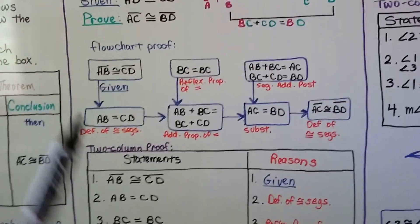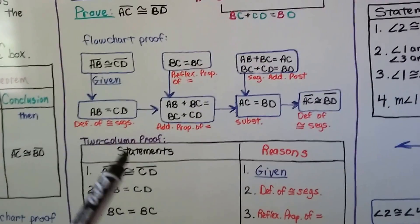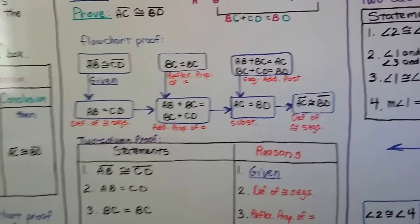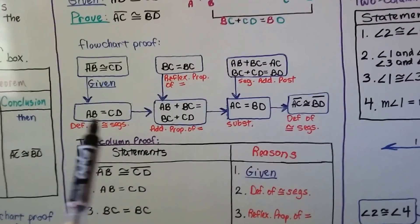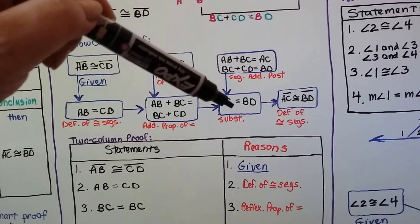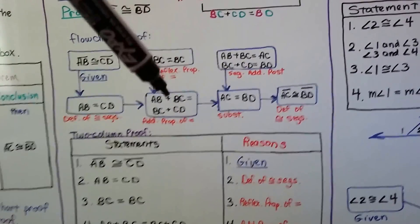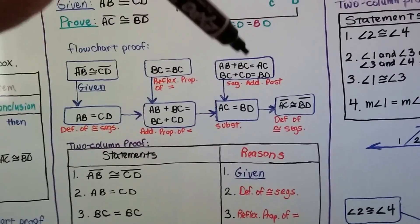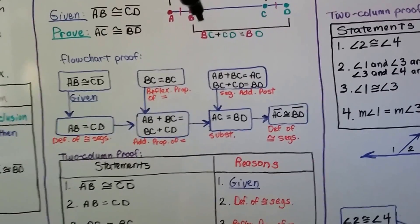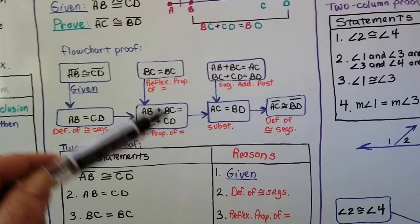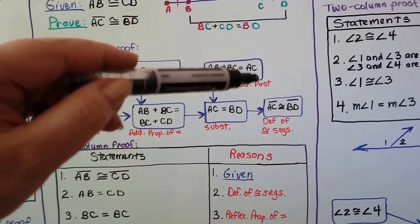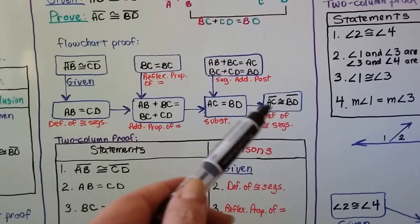We're going to use the measure from B to C to make AC, and also use B to C to make BD. So we can say BC equals BC — the one for AC is the same measurement as the one we use for BD. That's the reflexive property of equality. Now, because BC equals BC, we can say AB plus BC equals BC plus CD — we're just adding BC to both sides. That's the addition property of equality.